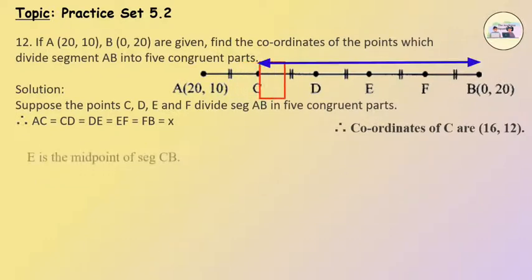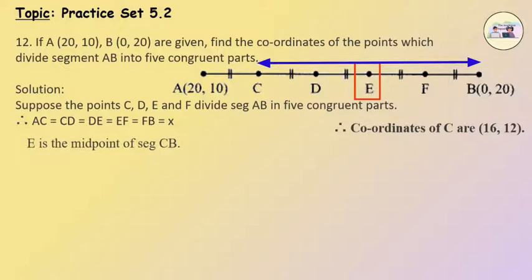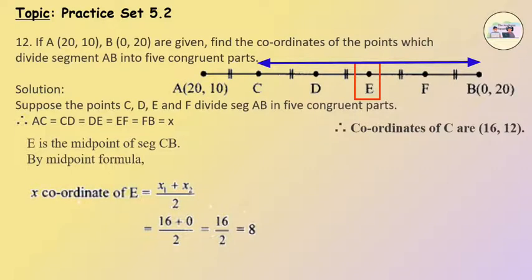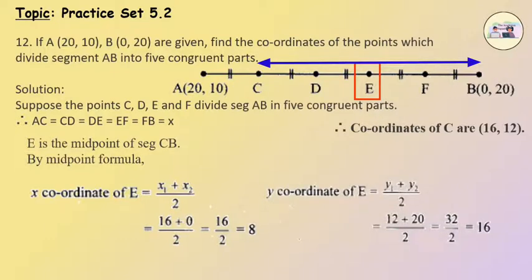E is the midpoint of segment CB. By the midpoint formula, the x-coordinate of E equals x1 plus x2 upon 2, which equals 16 plus 0 upon 2, which equals 16 upon 2, which equals 8. The y-coordinate of E equals y1 plus y2 upon 2, which equals 12 plus 20 upon 2, which equals 32 upon 2, which equals 16. Therefore, the coordinates of E are (8, 16).